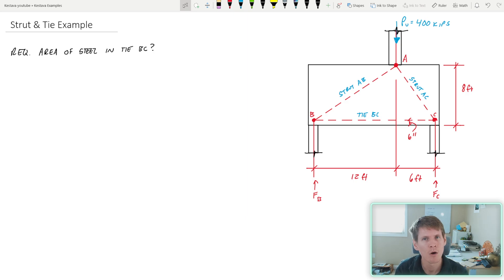So we are in strength design, which makes sense. Strut and tie is a concrete element, and that falls under the material code of the ACI, which you design everything in concrete under strength design. We're tasked with determining the required area of steel in tie BC.